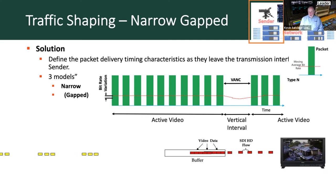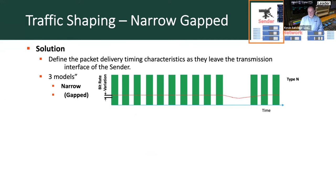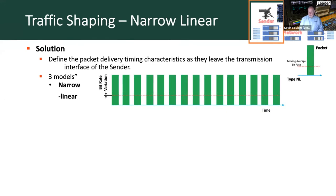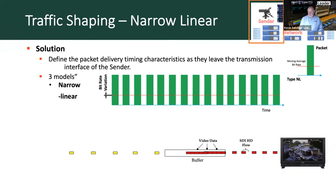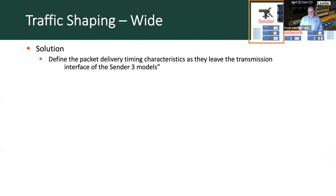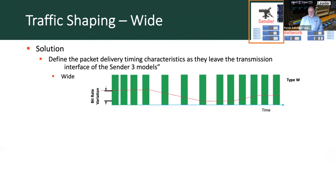Looking at the narrow linear model, it's essentially the same packets but now evenly spaced out with the gap removed, giving a nice even flow of packets into the buffer which are processed and drained out to produce a picture. The wide sender model sends packets as and when the sender processes them and places them onto the network, resulting in a wider bit rate variation.